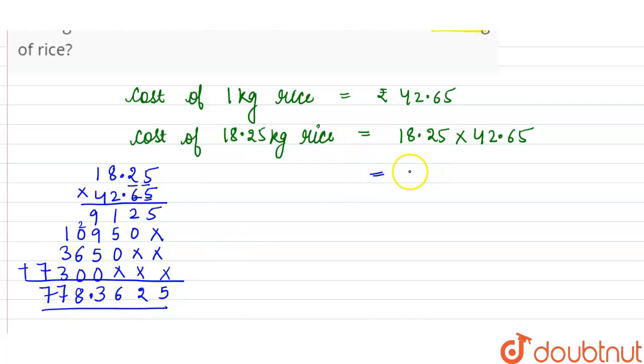So the answer to this question is that the cost of 18.25 kg of rice will be equal to rupees 778.3625.